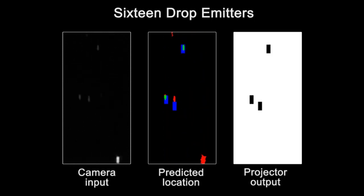This video shows multiple drops released from different drop emitters. The system is able to track and predict the future locations of each drop at 120 Hz.